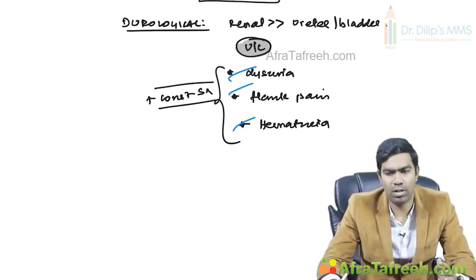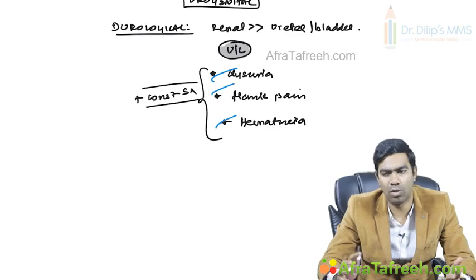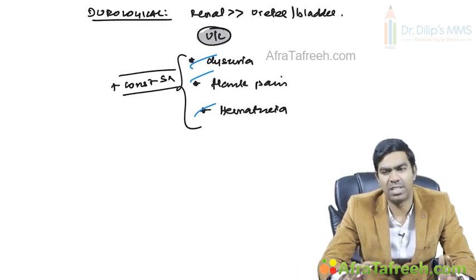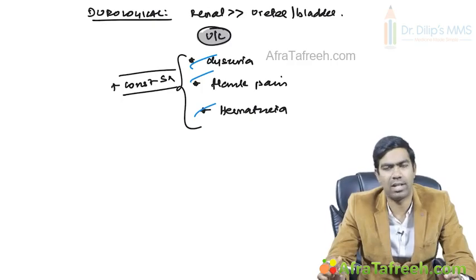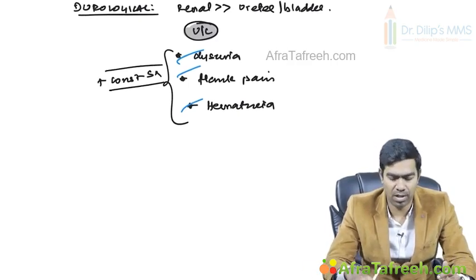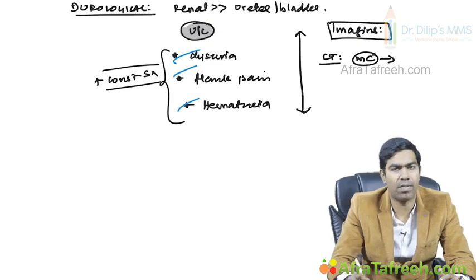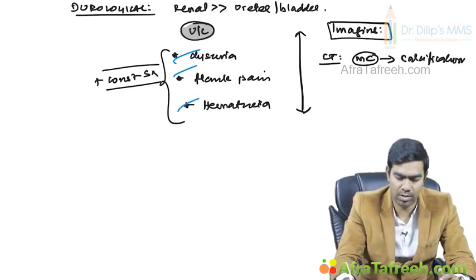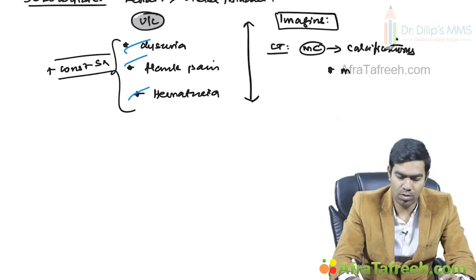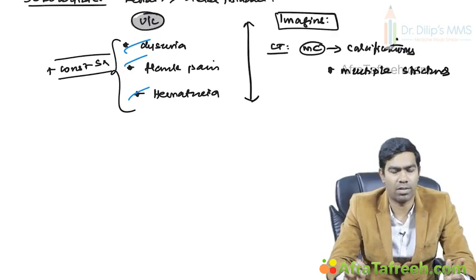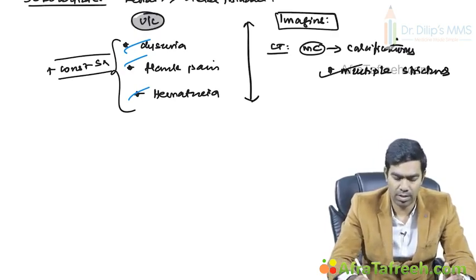Urogenital TB is difficult to diagnose without tissue biopsy. For exam purposes, characteristic imaging findings are important. On CT, the most common finding is calcifications. There may also be multiple strictures with calcification or even cavity formation - these are some of the CT findings.